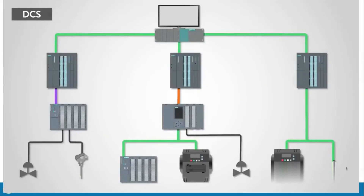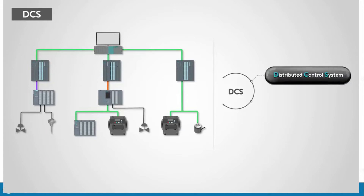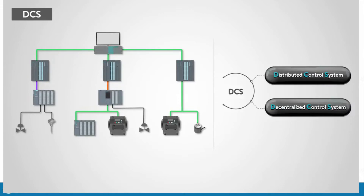First, let's clarify for the purpose of this lesson what we mean by DCS. Over the years, the term DCS has evolved from the original description as a distributed control system to the use of the term decentralized control system, and they seem to be somewhat interchangeable nowadays. Regardless of which description is used, we are discussing a structure that at the high-level view is a system that coordinates and supervises an entire plant of many varying processes.